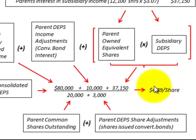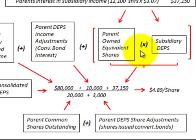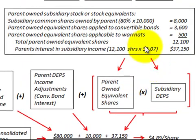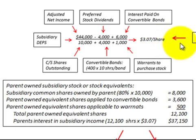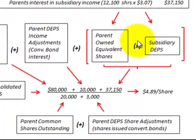What I've done here is plugged numbers into the formula to illustrate the process. The key point is the component where the parent's owned equivalent shares times the subsidiary's diluted earnings per share is used. This requires calculating the parent's owned subsidiary stock or stock equivalents and the subsidiary's diluted EPS separately first, then plugging both into the consolidated diluted earnings per share formula.